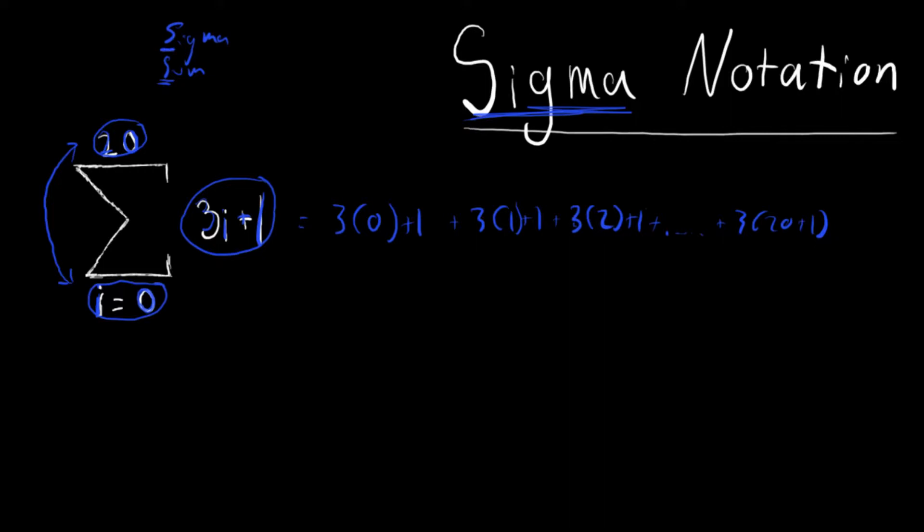This is actually incredibly useful. So this can mean anything. So if we have sigma i equals 0 to 5, i squared,